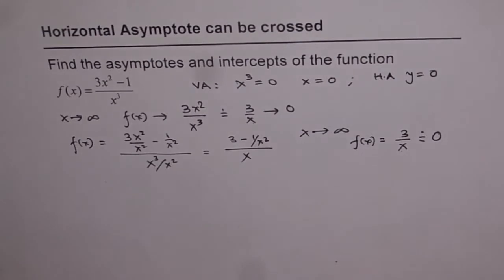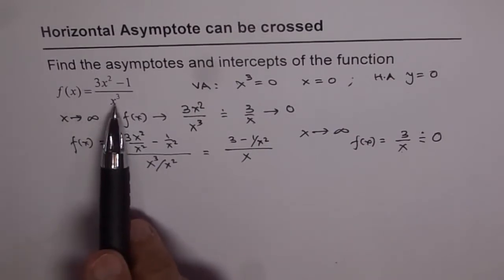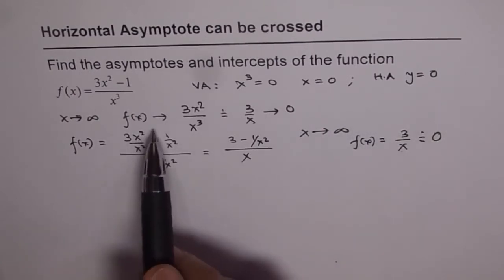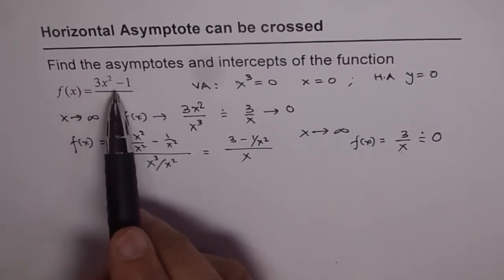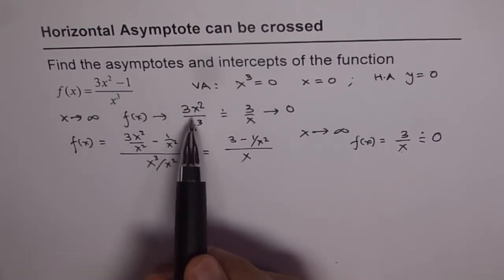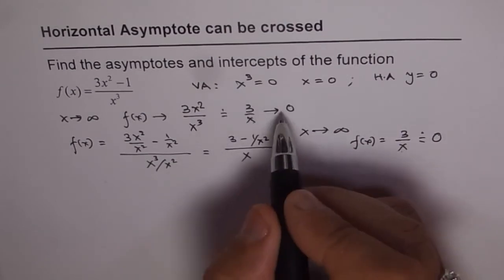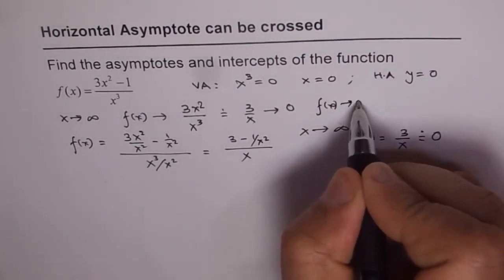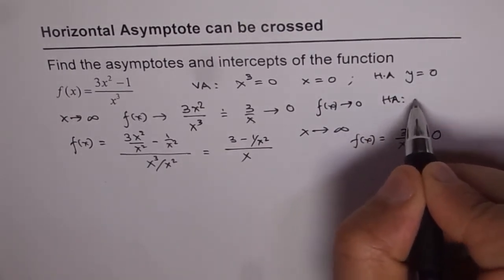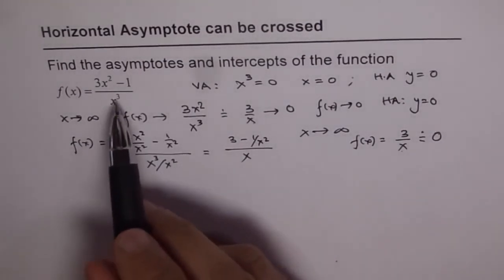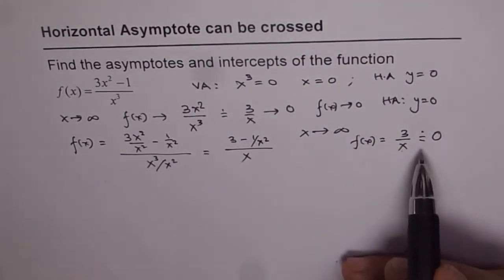So either way, you can work it out. I have shown you 3 strategies to find the horizontal asymptote. One: straight from the degree — numerator degree less than denominator, so horizontal asymptote is y = 0. Second: by approximation — 3x² is far bigger than −1, so approximately 3x²/x³ = 3/x, which approaches 0 as x → ∞, giving horizontal asymptote y = 0. Third: divide everything by x² and find the same answer.